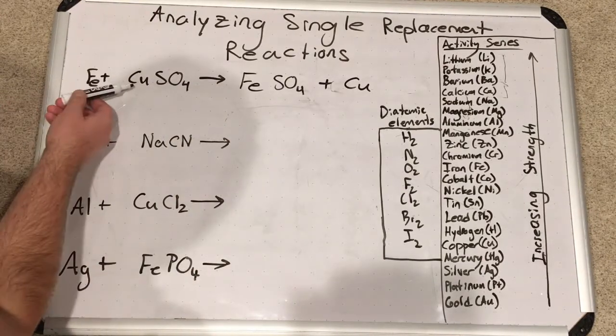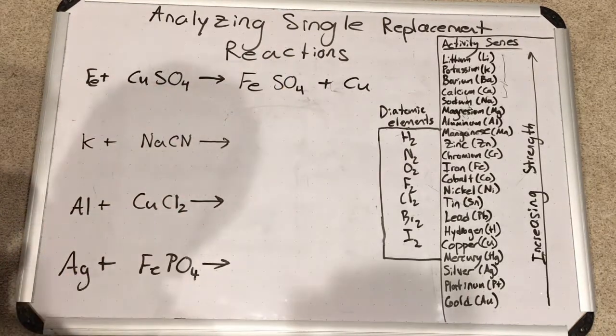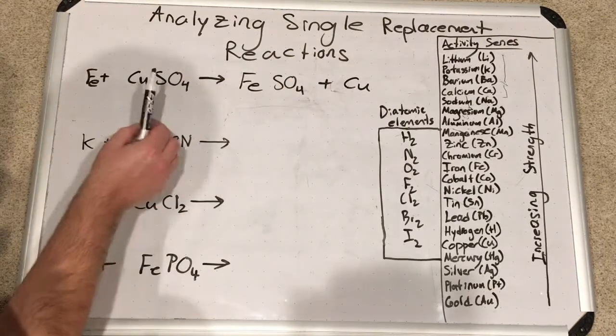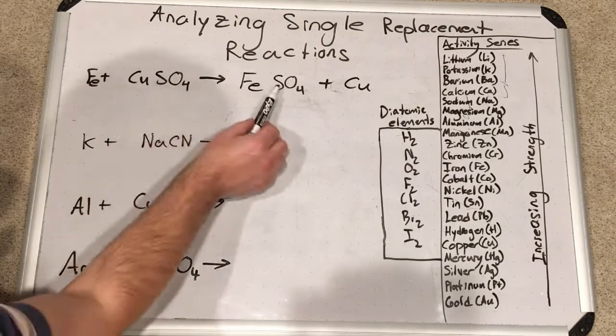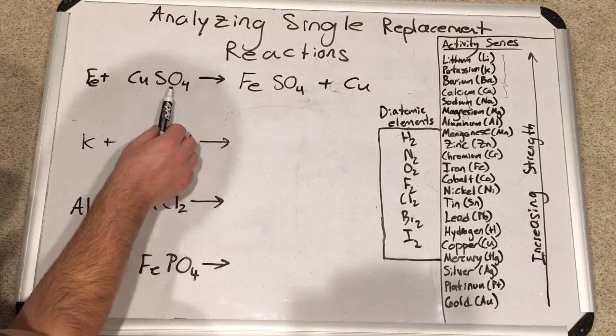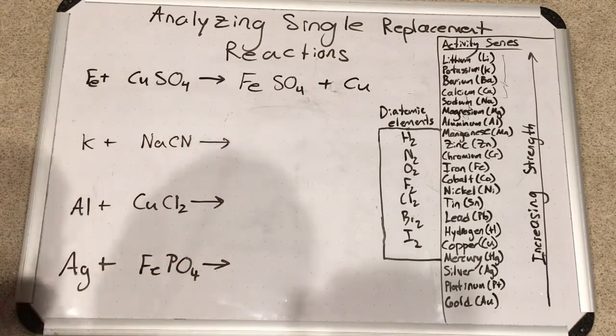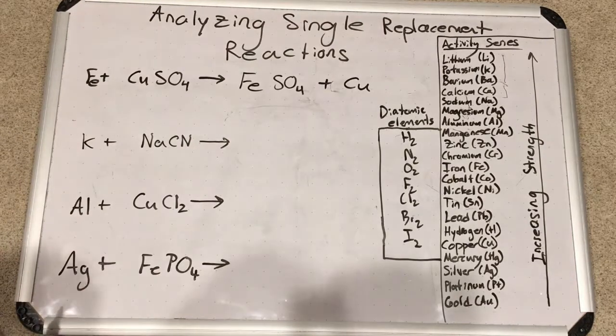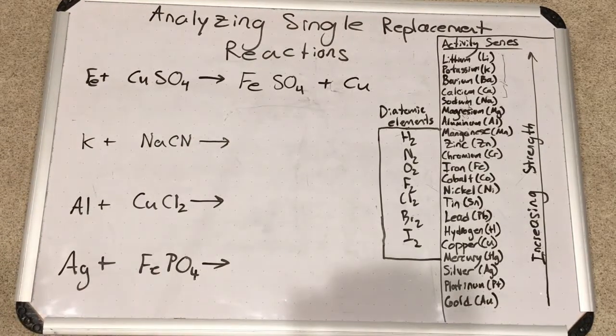Now what we're going to do is we're going to balance the whole reaction. So iron, we have one and here we have one as well. So iron is done. Starting from the left, we have copper next. We've got one copper, one copper. Then we have sulfur, one on this side, one on that side. And we have oxygen, four on that side, four on that side. So this one is done. The reaction does occur and it's balanced.